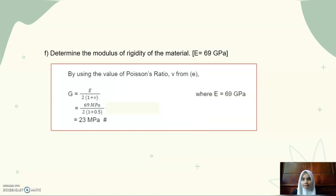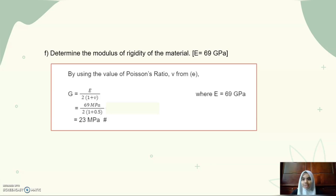Next, we move to the last question, which is question 1F. We need to determine the modulus of rigidity of the material, given that Young's modulus is 69 GPa. Using the Poisson's ratio V from question E, we apply the formula: modulus of rigidity G equals E divided by 2 multiplied by (1 plus V). Substituting 69 GPa divided by 2 multiplied by (1 plus 0.5), we get the modulus of rigidity equal to 23 GPa. That's all for me. Thank you.